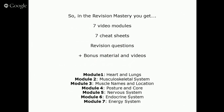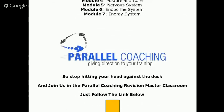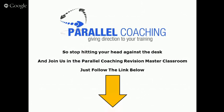All of this is inside the Revision Mastery for you. There are seven modules, seven cheat sheets, revision questions, plus bonus material and videos. Module one is heart and lungs, module two musculoskeletal system, module three muscle names and location, module four posture and core, module five nervous system, module six the endocrine system, and module seven being the energy systems. So stop hitting your head against the desk and join us now in the Parallel Coaching Revision Mastery Classroom — just follow the link below.